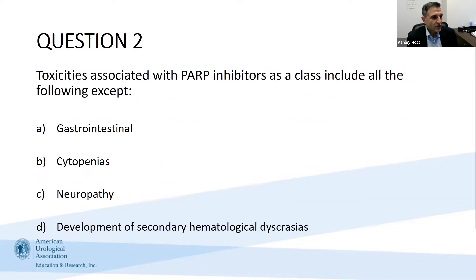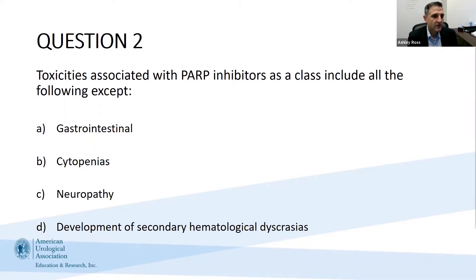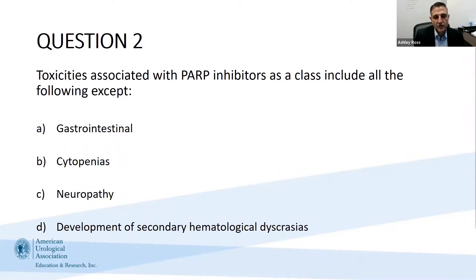Question two: Toxicity associated with PARP inhibitors as a class of drugs includes all of the following except: A, gastrointestinal toxicities; B, cytopenias; C, neuropathies; or D, the development of secondary hematological dyscrasias.